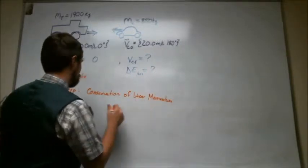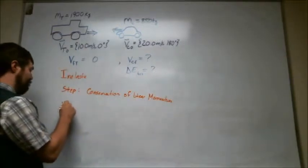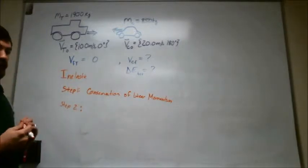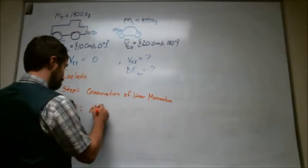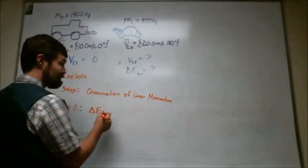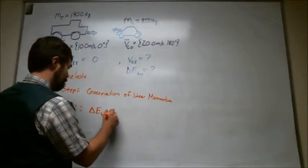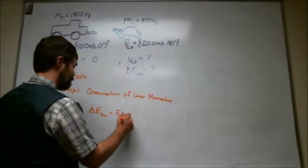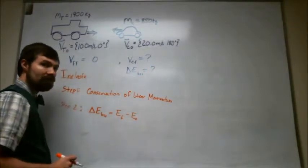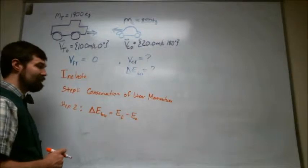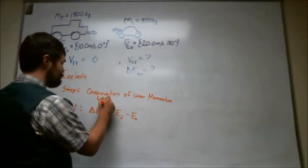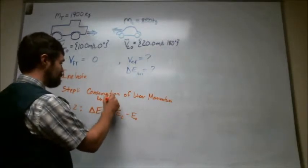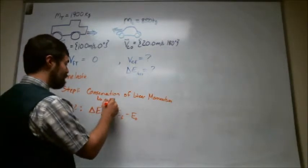Step two, we're going to use that delta E loss is going to be the final energy minus the initial energy. And so basically this one right here gets the speed of the car after the collision. Step one.